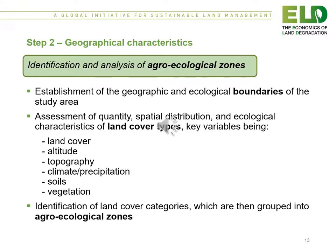Step two is the geographical characteristics — the identification and analysis of the agroecological zones. This means establishing the geographic and ecological boundaries of the study area, assessing the quantity, spatial distribution, and ecological characteristics of the land cover types. Key variables include land cover, altitude, topography, climate, precipitation, soils, and vegetation. The identification of land cover categories are then grouped into agroecological zones.